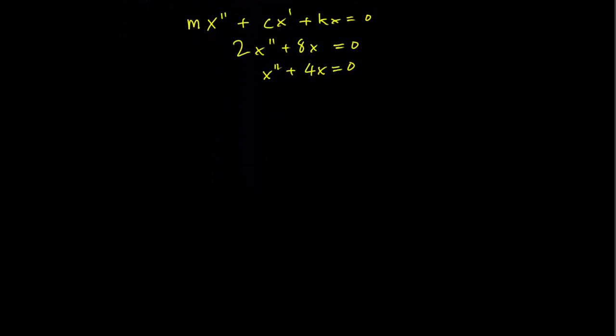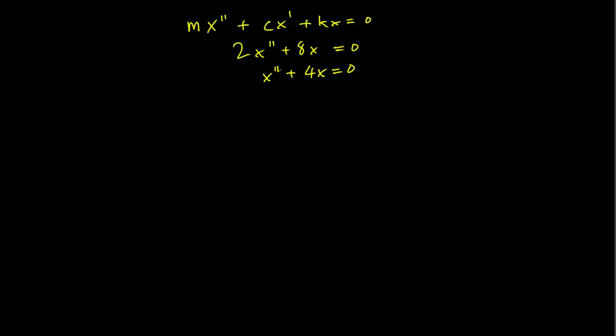So we make our usual substitution here, x = e^(rt). And we have to consider the characteristic equation: r² + 4 = 0.